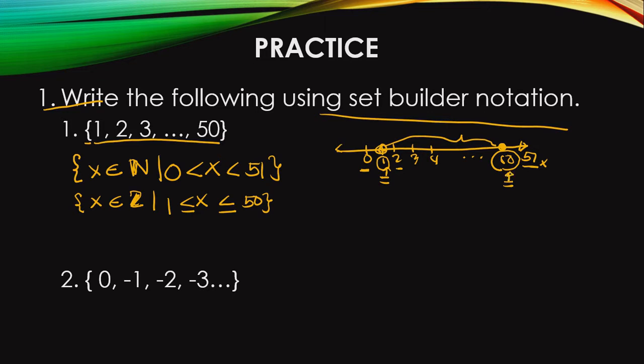The second one is: we have the set of 0, negative 1, negative 2, negative 3. So these are the set of negative numbers with 0.